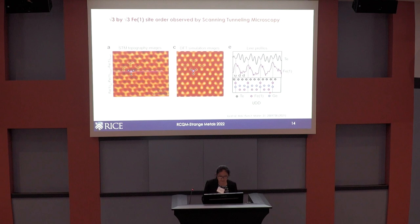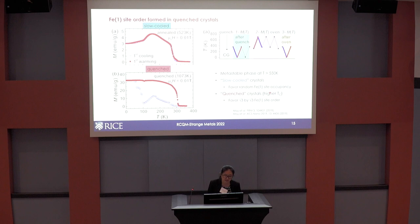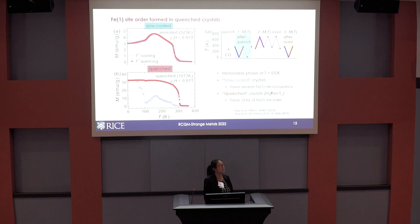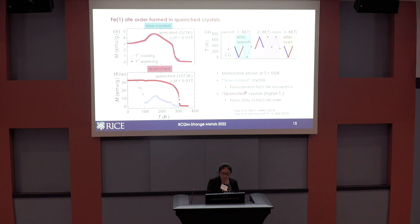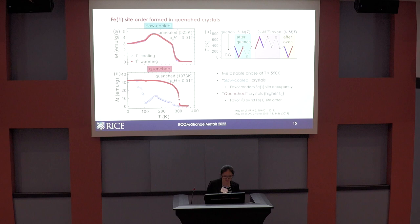The key to tunability is that it's already been demonstrated that it depends on the speed at which you cool the crystals from growth. There is a metastable phase transition at around 550 Kelvin. If you slowly cool the crystal from above this temperature to room temperature, the crystal forms randomly occupied iron-1 sites, preserving global inversion symmetry. If you quench the crystal from above this metastable phase transition, the root-3 by root-3 site occupation order forms. For quenched crystals, the Tc happens to be slightly higher.